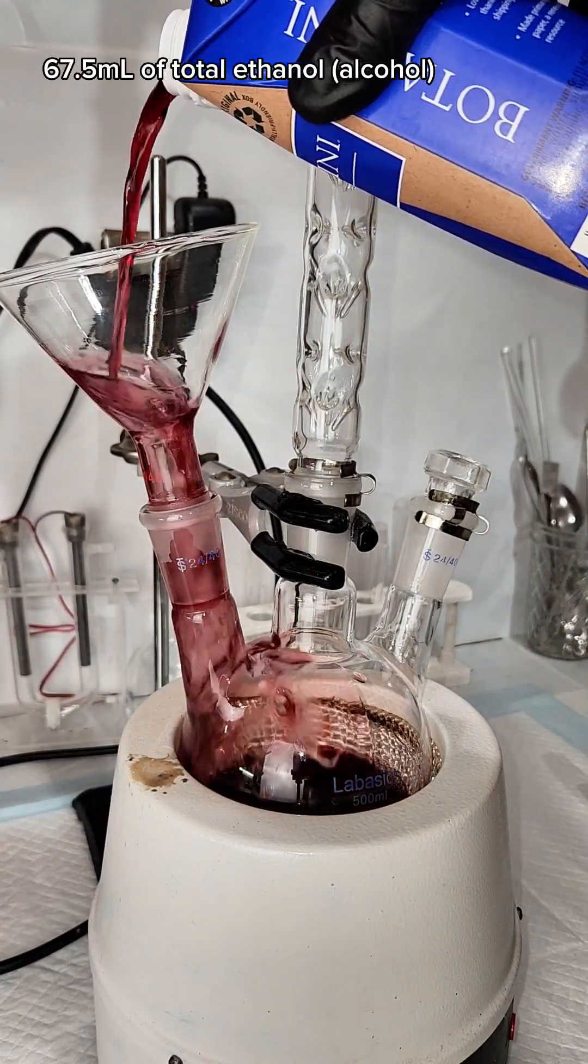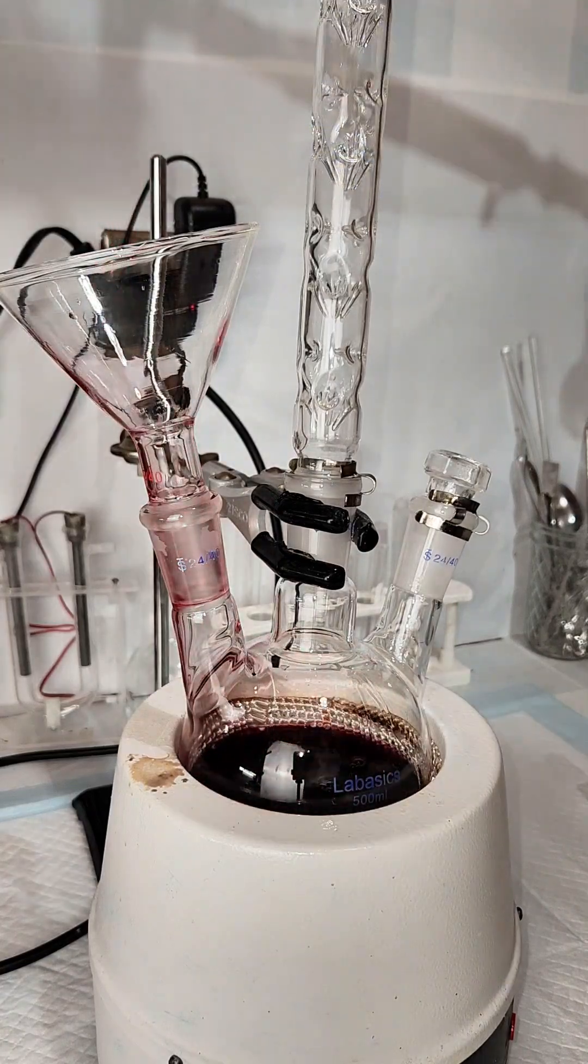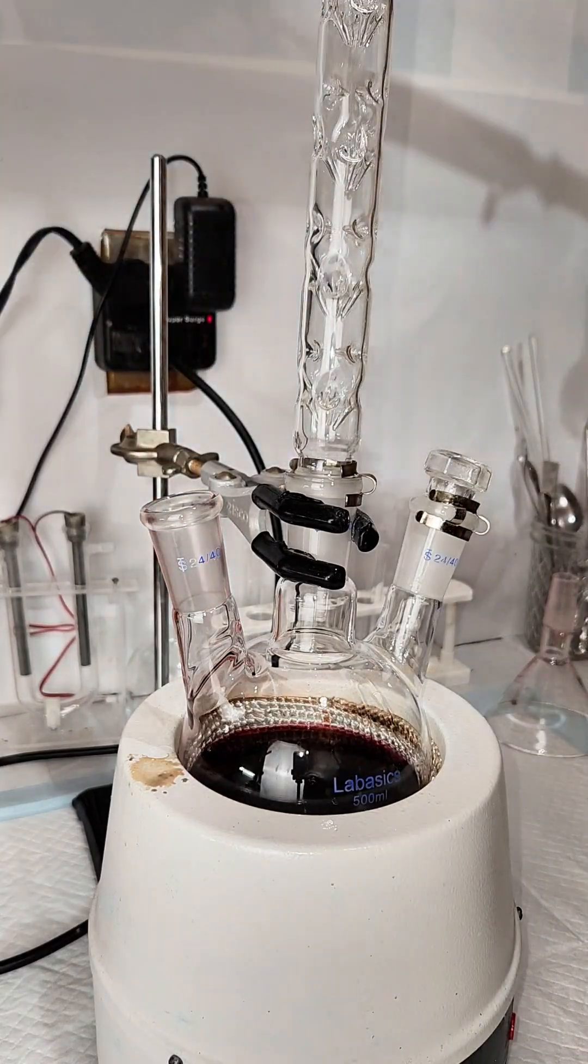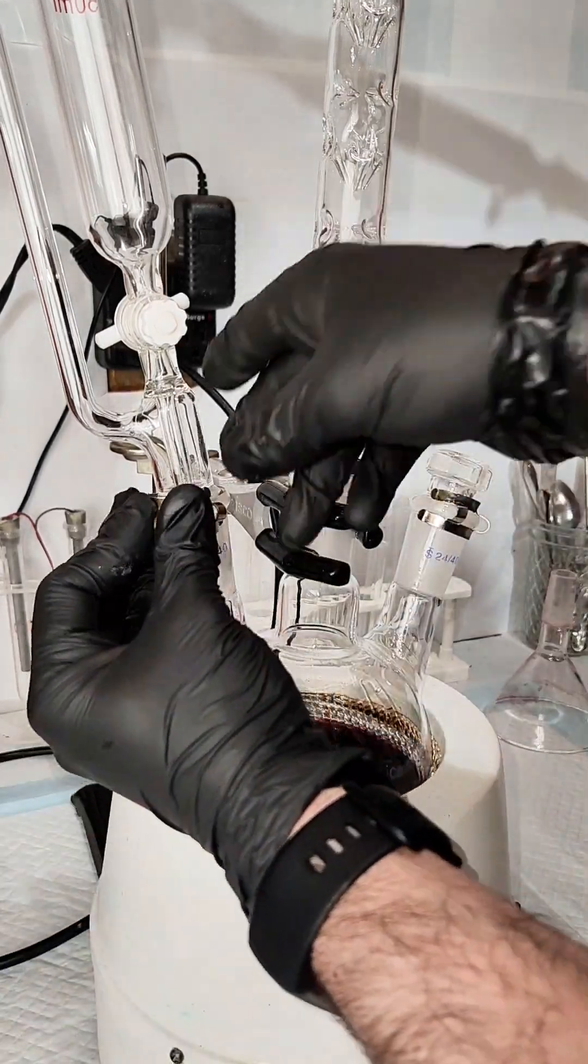In any case, this nasty little Bota box is 500ml at 13.5% ABV, which means that theoretically there's about 67.5ml of pure ethanol in this bottle.